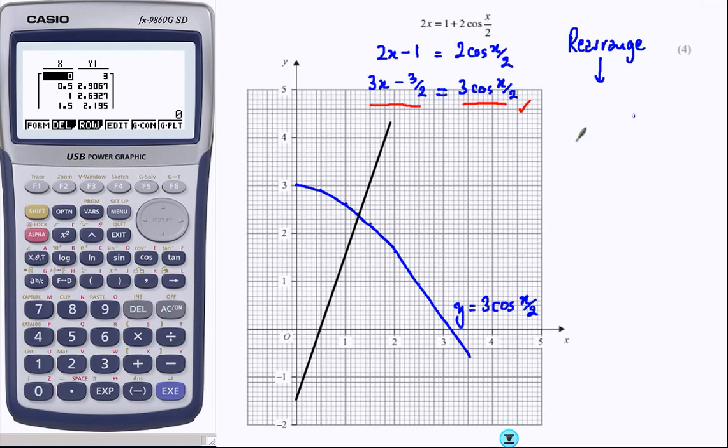And solution. Well, solution is going to be where they cross, which on my rather badly drawn thing is here. 1.3.